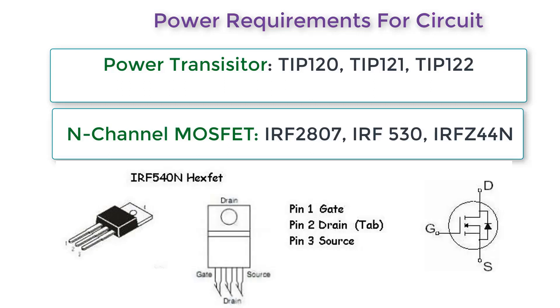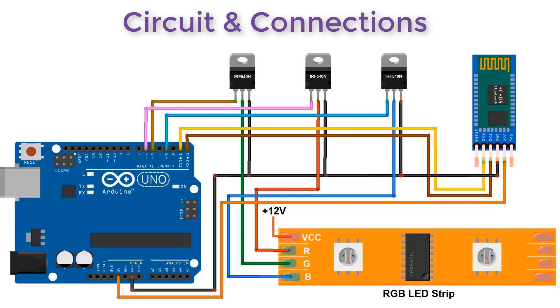In my case, I am going with IRF 540, an N-channel MOSFET which has gate, drain, and source terminals. You can see the circuit how I have connected the IRF 540 MOSFET. Its gate terminal is connected to the PWM pins of Arduino, and drain is connected to the RGB LED strip. Source is grounded.